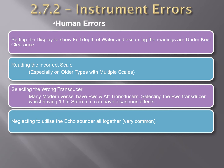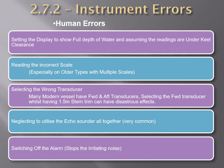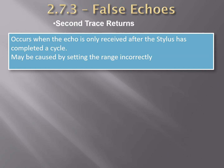Officers sometimes forget to use the echo sounder altogether, especially when approaching ports, which could result in a serious incident. Switching off the alarm sounded by the echo sounder without checking what the alarm is for may also result in accidents. Moving on, false echoes are among the most common types of errors and are experienced quite frequently. They should be well understood in order to correctly interpret the true soundings.